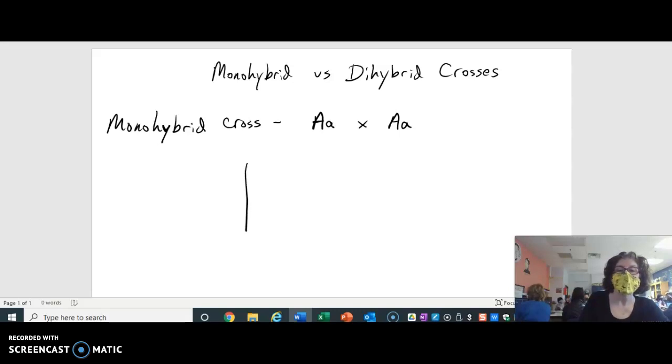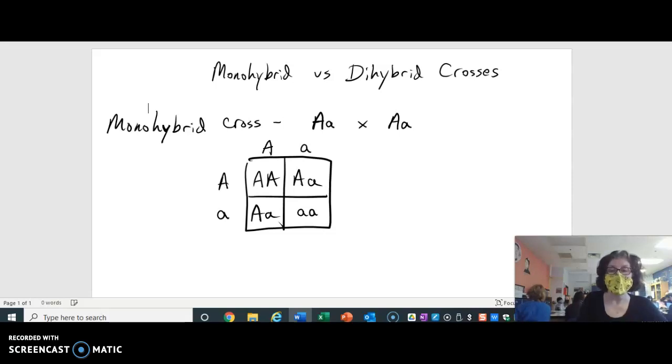So you do a Punnett square with four boxes, and you're following the laws of segregation. Each parent goes across the top and the side. That's the way I do it. And you separate the alleles for one parent here and for the other parent there.